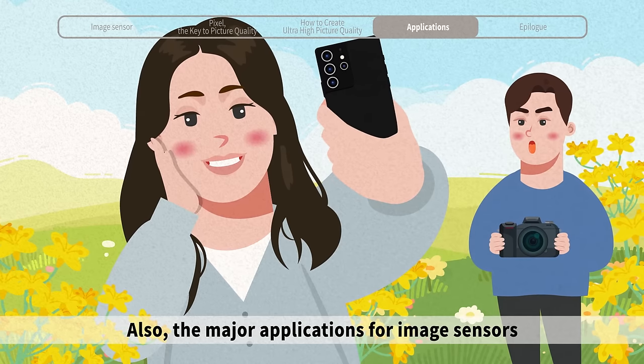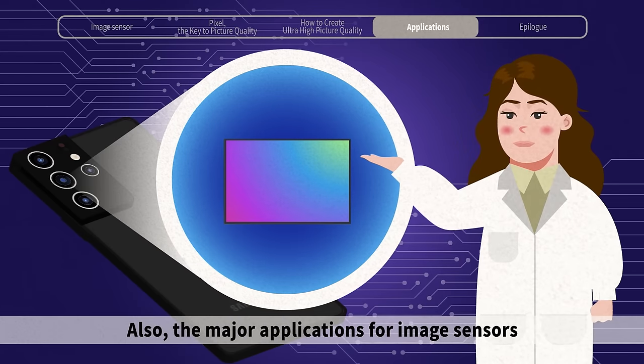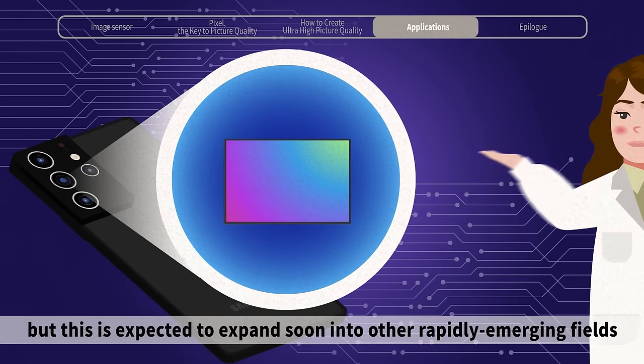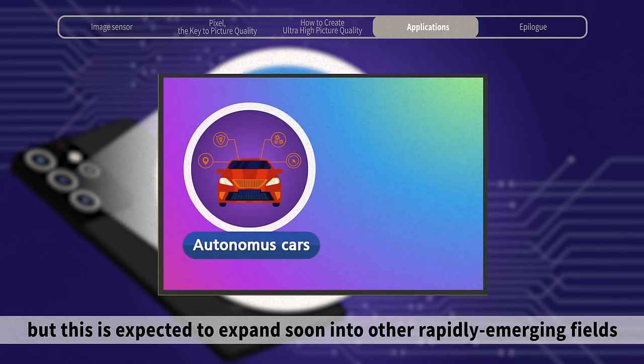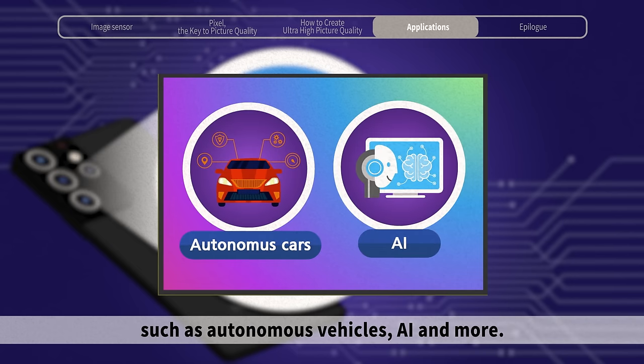Also, the major applications for image sensors have been in the smartphone field, but this is expected to expand soon into other rapidly emerging fields, such as autonomous vehicles, AI, and more.